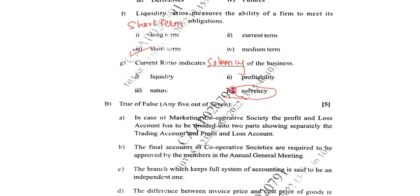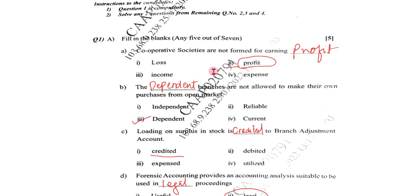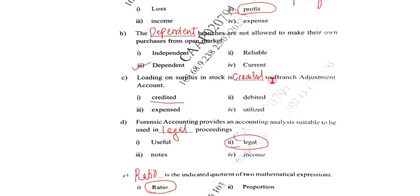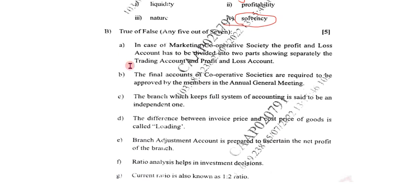These were the correct answers for fill in the blanks. Now we will move to the next part, that is question number 1B — true or false. Solve any 5 out of 7. Total marks is 5.